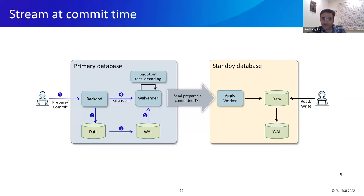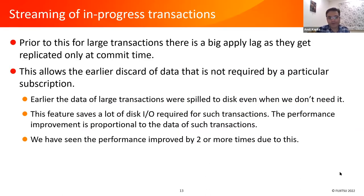In the basic default system, all transactions are decoded at commit time. For very large transactions, this leads to a very big apply lag, because until all the WAL for the transaction is decoded, we don't send it to the standby. But with PostgreSQL 14, we start streaming the data for in-progress transactions as well.